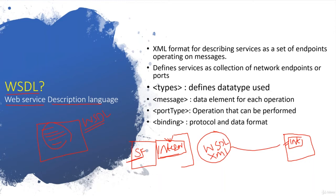WSDL is an XML format for describing services as a set of endpoints operating on messages - which endpoint, what messages are there, how we can communicate with them, what type of request they want, what kind of response they give - everything is described in the WSDL. All WSDL files are XML-based, and inside they define what services are exposed, on which endpoint, and based on what port.